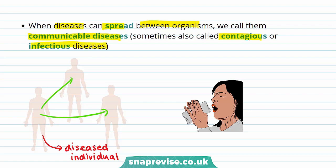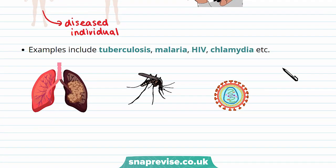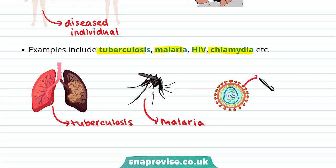Sneezing and coughing is one way to pass on infectious diseases to other people. Some examples of communicable diseases include tuberculosis, malaria, HIV and chlamydia, as well as many more. Tuberculosis, also known as TB, is a bacterial infection spread by inhaling tiny droplets from the coughs or sneezes of an infected person. Malaria is caused by a protist that lives inside a mosquito. HIV is a virus that can be transmitted through sexual intercourse.